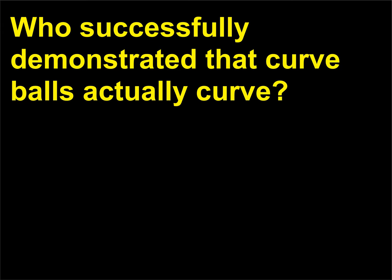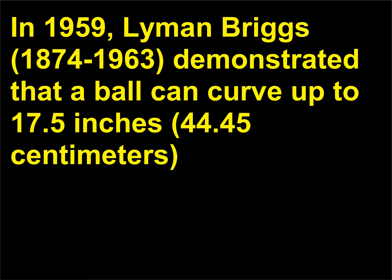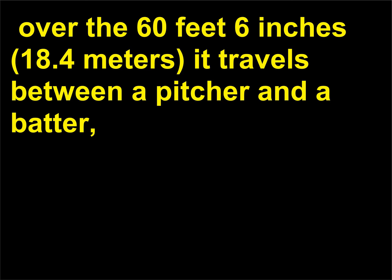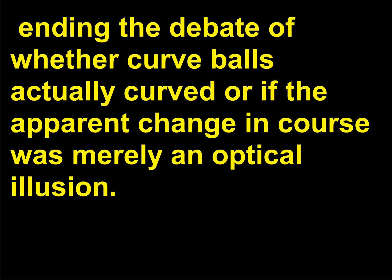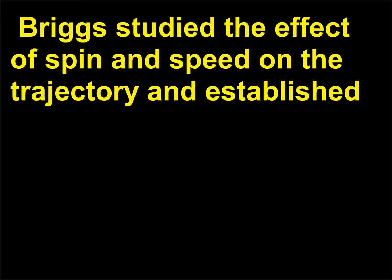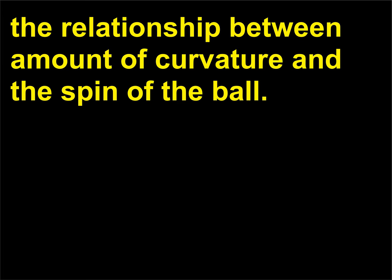Who successfully demonstrated that curve balls actually curve? In 1959, Lyman Briggs (1874–1963) demonstrated that a ball can curve up to 17.5 inches (44.45 centimeters) over the 60 feet 6 inches (18.4 meters) it travels between a pitcher and a batter, ending the debate of whether curve balls actually curved or if the apparent change in course was merely an optical illusion. Briggs studied the effect of spin and speed on the trajectory and established the relationship between amount of curvature and the spin of the ball.